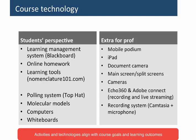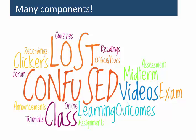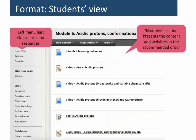With all these components, there is the possibility for students or the professor to become completely lost or confused. Here are some of the ways I use to organize the class, make it predictable, and simple to follow along. From the students' view, this is the learning management system. In the left menu bar there are quick links and resources; if students need to get quickly to their class notes while sitting in class, they can do so. The modules section on the right-hand side presents the content and activities in the recommended order.